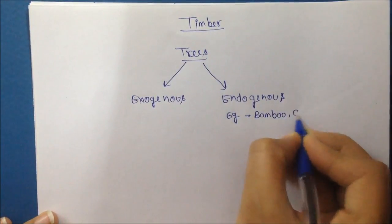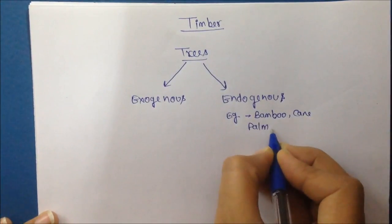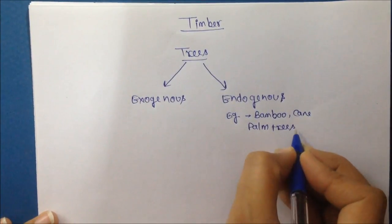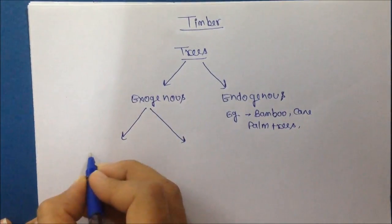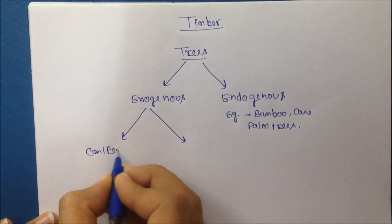Example of endogenous trees are bamboo, cane, palm trees and exogenous trees again divide into two parts. First is conifer trees and second is deciduous trees.